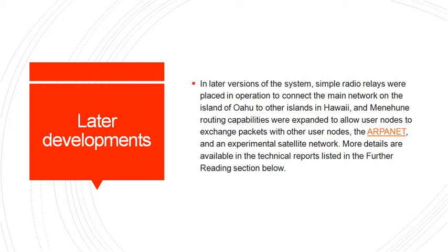In later versions, simple radio relays were placed in operation to connect the main network on the ICA and OU campuses to other islands in Hawaii. The main and minor routing capabilities were expanded to allow user nodes to exchange packets with other user nodes, the ARPANET, and an experimental satellite network. More details are available in technical reports listed in the further reading section.